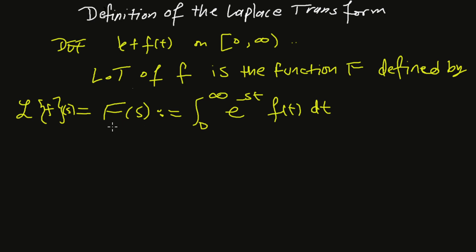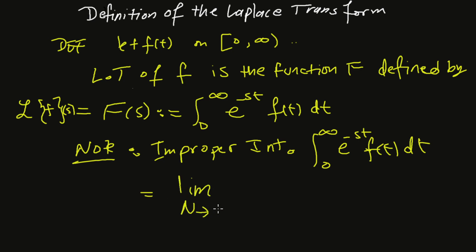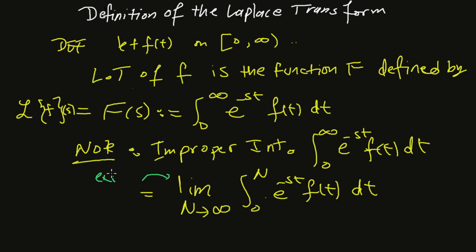The Laplace transform of f is denoted by capital F. This is an improper integral, and more precisely it can be written as the limit as n approaches infinity of the integral from zero to n — the same thing. So whenever that limit exists, the transform is defined.